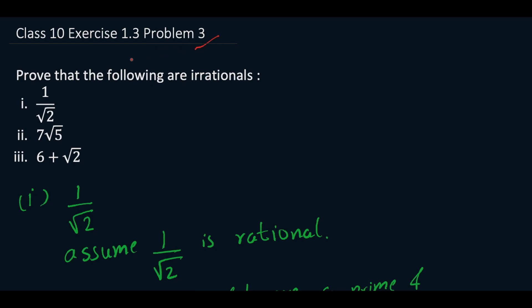Welcome to problem 3 of exercise 1.3. We need to show that these three numbers are irrational: first is 1 by root 2, second is 7 root 5, and third is 6 plus root 2.